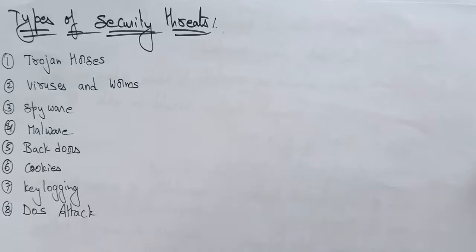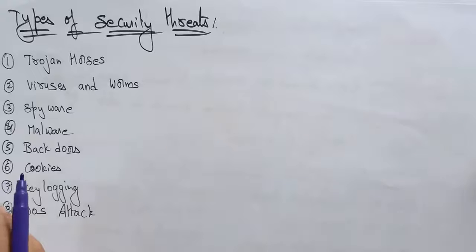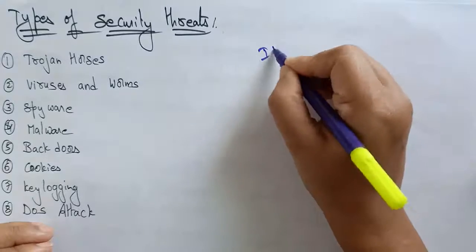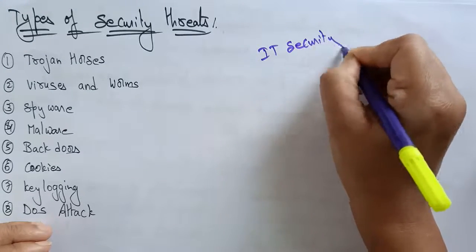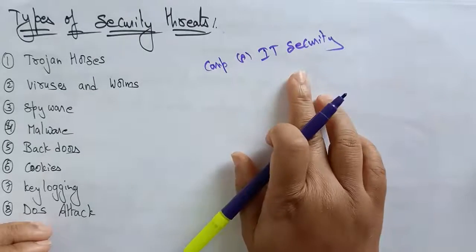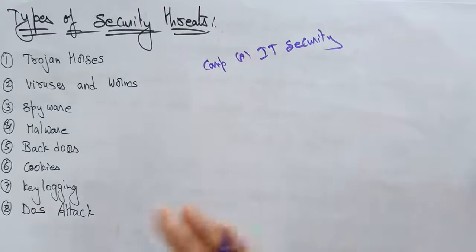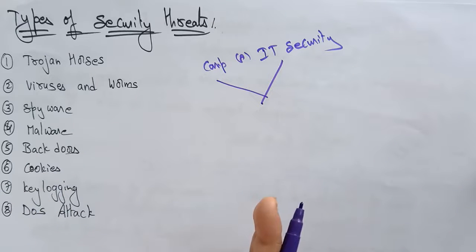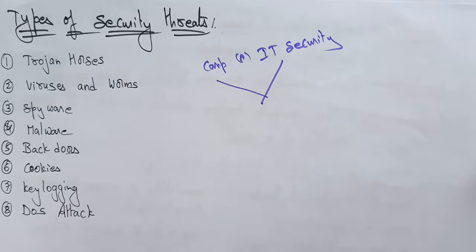Before explaining all these different types of threats, I want to give a little information regarding security threats. Computer security — whether it's your personal computer security or IT security — is a global demand to protect computer systems from malicious attackers from doing any damage to your hardware, software, as well as disruption of services provided.